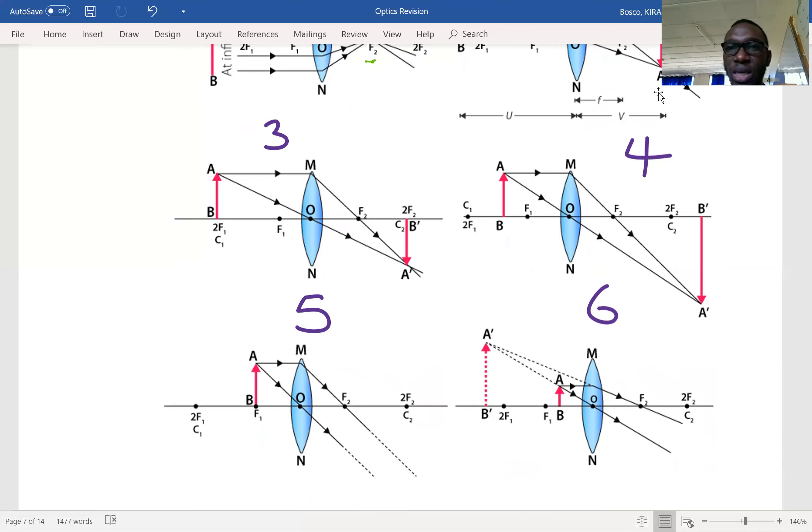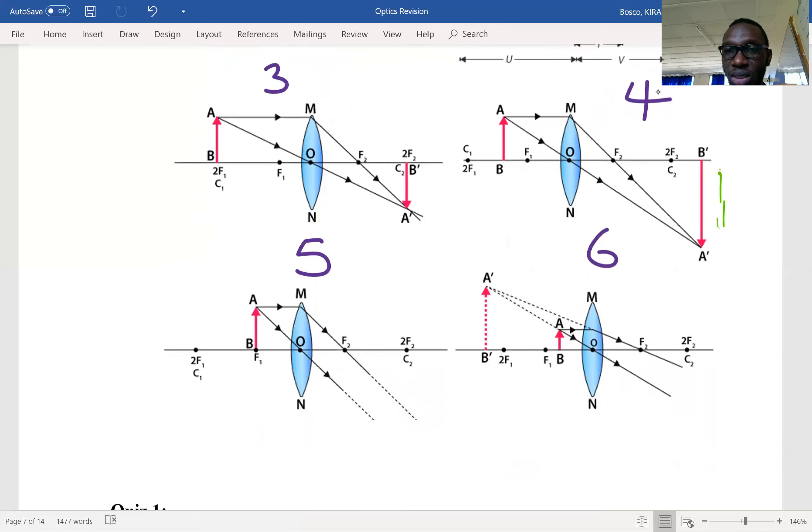If you look at diagram four, you have an object which is upright, AB, and the image is inverted. The image is magnified, so you can see those are some of the properties you can give for this.